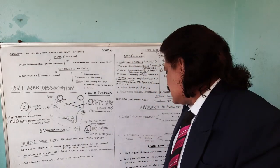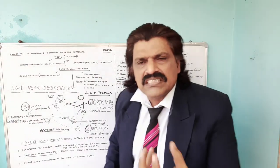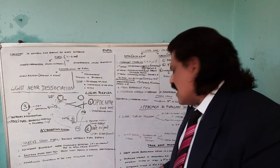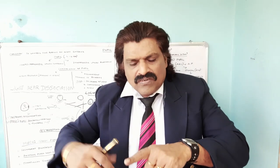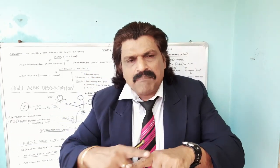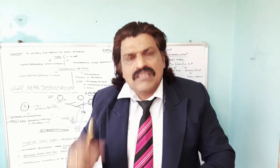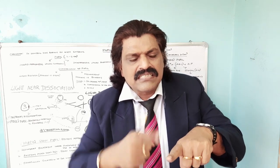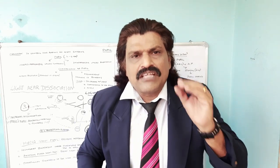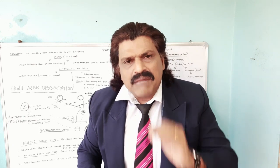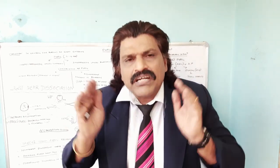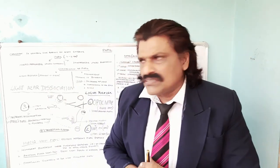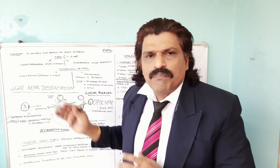Second take-home: anisocoria worsening in darkness is Horner syndrome; anisocoria worsening in bright light is third nerve palsy. Third take-home: in compressive third nerve lesions, parasympathetic fibers are affected earliest — pupils are first to be involved. In diabetic (ischemic) third nerve palsy, parasympathetic fibers run superficially and are spared — these are pupil-sparing third nerve palsies, and pupil involvement, if any, is very late.